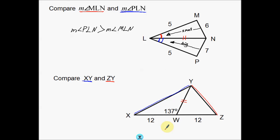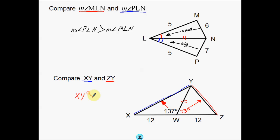Now that I have those pairs of sides, I can start looking at the angles. Notice that this 137 degrees helps to make side XY really big — 137 is a pretty big angle. But we're missing the angle on the other side to compare with. So I go back to some previous knowledge: this is a straight line, and straight lines are 180 degrees. So I take 180 minus 137 and I get 43 degrees. Now I'm 100% sure that YZ is going to be the smaller side, and 137 makes XY the larger side. So XY is going to be larger than ZY.